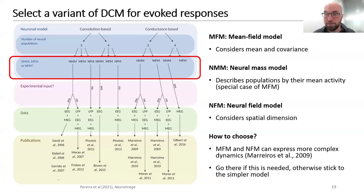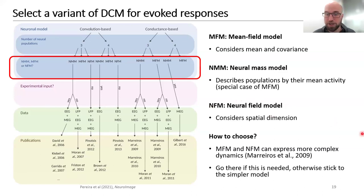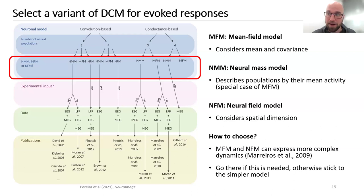There are also neural field models which consider the spatial dimension of the canonical microcircuit. Mean field models and neural field models can express more complex dynamics, so I recommend going there if needed. Otherwise, stick to the simpler model — in most cases neural mass models will be fine and are the safer choice.